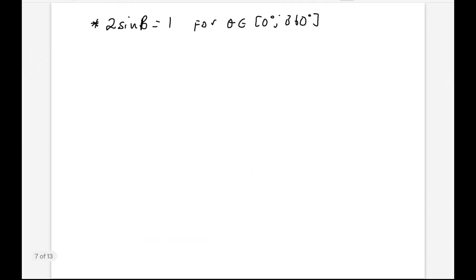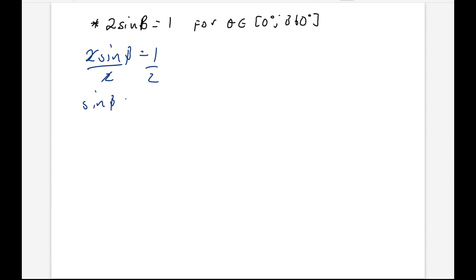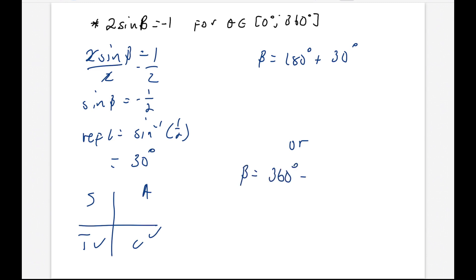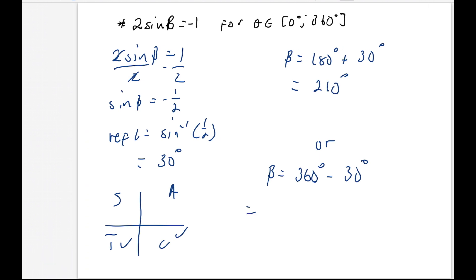So if you see that the 2theta is in the angle, don't divide by 2 immediately — find your reference angle, find where it's positive or negative, then write 2theta, and only then can you divide by 2. On the other hand, if you're told 2 sine beta equals negative 1, that 2 is not in the angle, so we're allowed to divide by 2 immediately. We divide both sides by 2 and get sine beta equals negative 0.5. Then we find our reference angle: sine inverse of 0.5 is 30 degrees. But this time, we're looking for where sine is negative — that's in the third and fourth quadrants. So the solutions are 180 plus 30 = 210 degrees, and 360 minus 30 = 330 degrees.